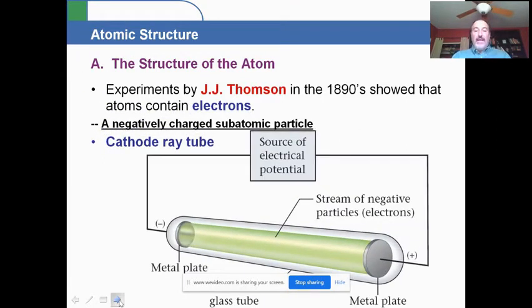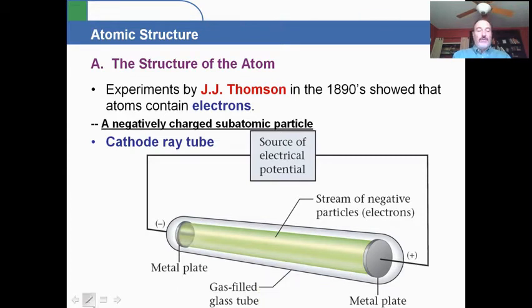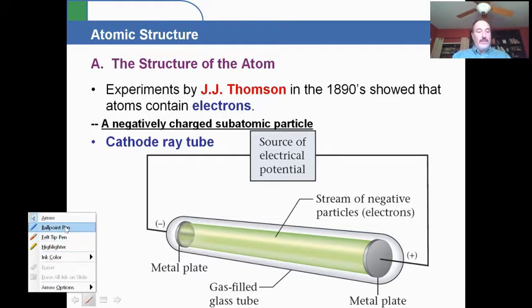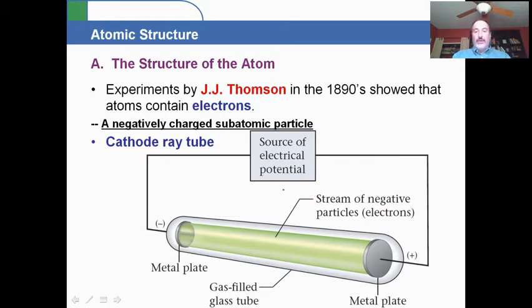A cathode ray tube was basically a glass vacuum filled tube that had a very small amount of gas inside of it. It had a large battery attached to it - the source of electrical potential - and it had wires with electricity flowing through them. At one end they had a plate here, and another one here. When the electricity was running, a beam of light shone from one electrode to the other.